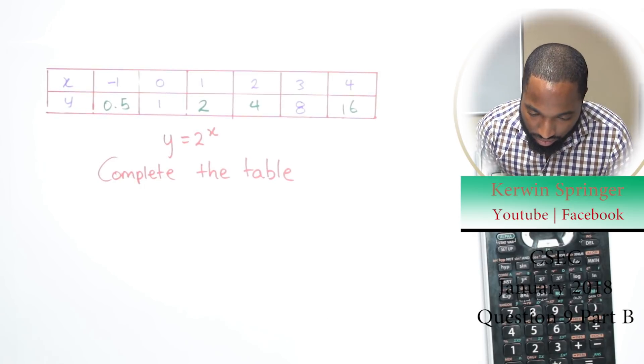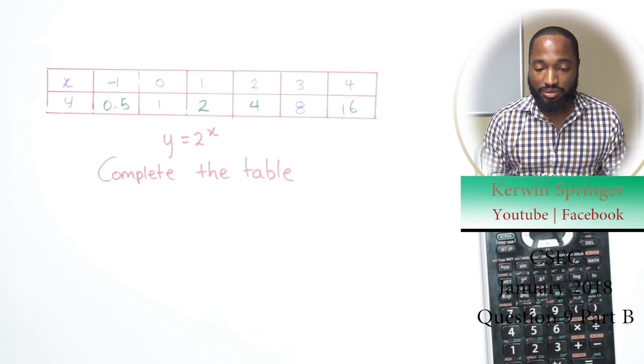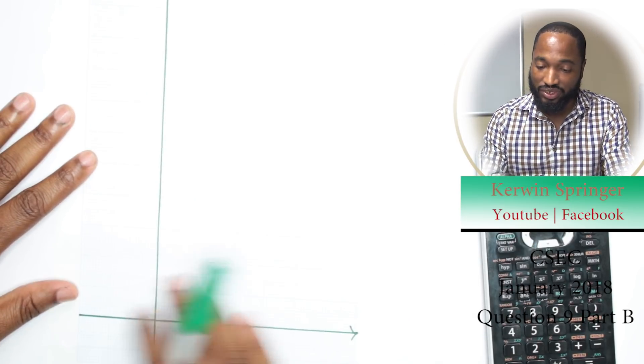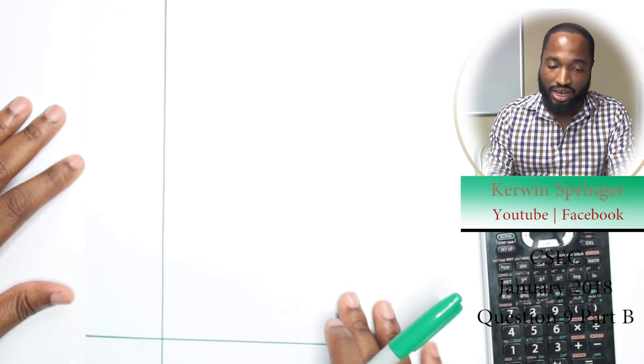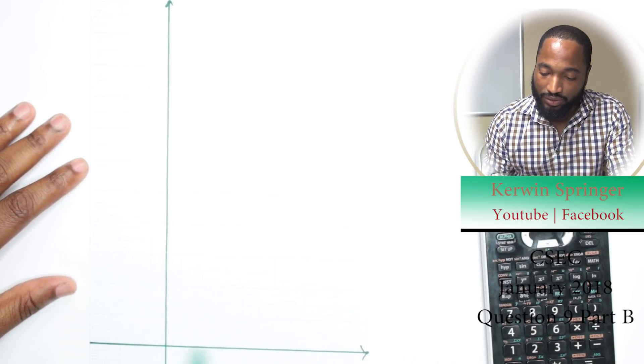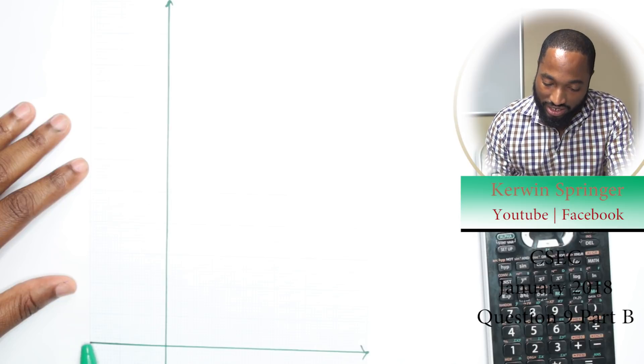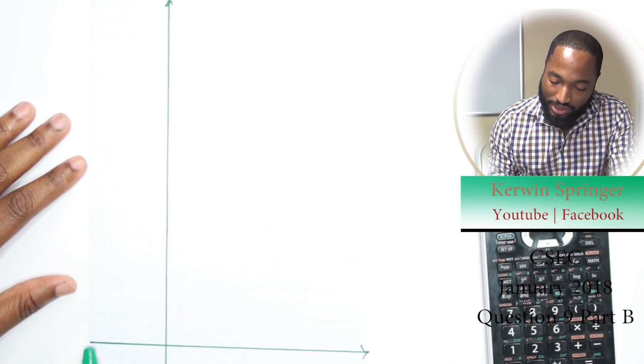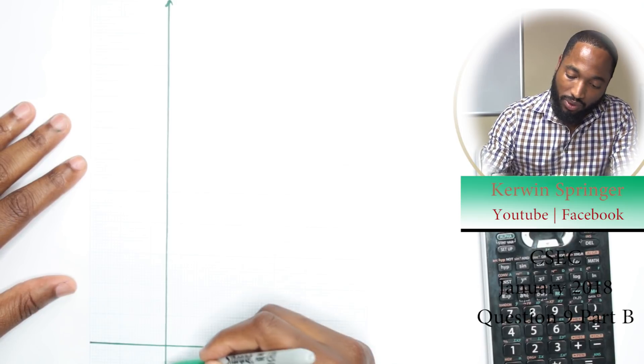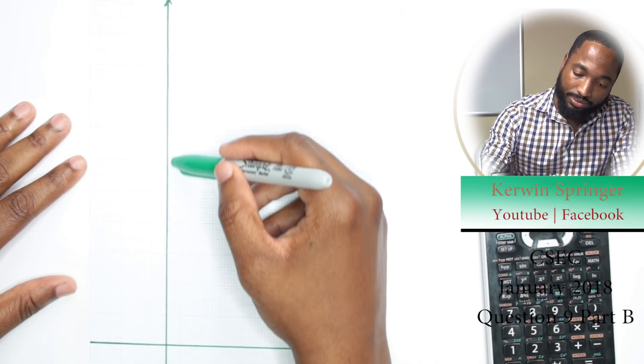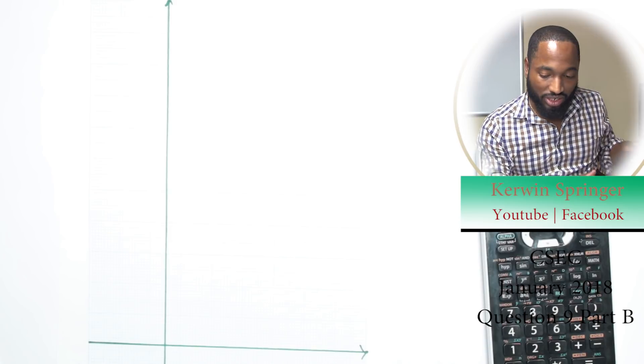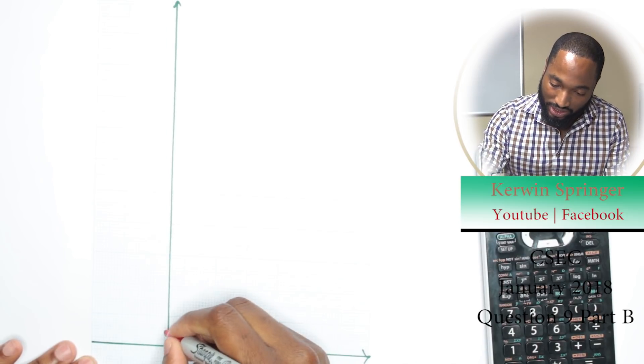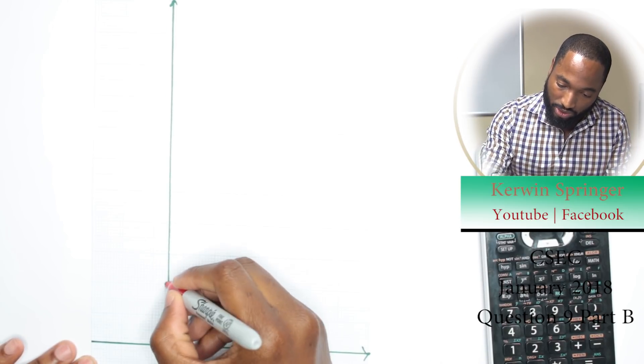Next up, they ask us to draw a graph of this table and they gave us the scale. They just gave us a graph like this and they asked us to fix it up. Now they gave us the scale to use: on the x-axis, two centimeters were supposed to be one unit, and on the y-axis, one centimeter was supposed to be one unit. So you could come and put some dashes to get prepared to do this thing.